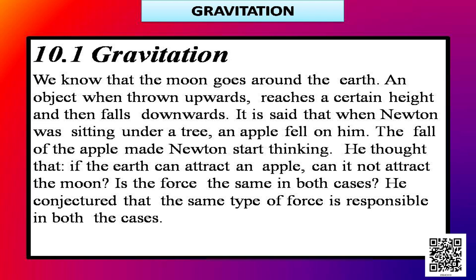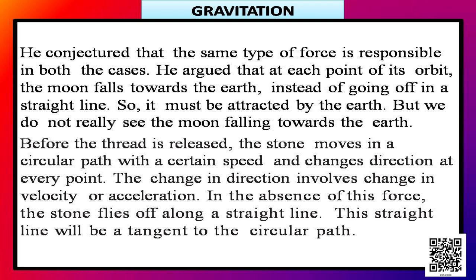It is said that when Newton — the great Sir Isaac Newton — was sitting under a tree, an apple fell on him. The fall of the apple made Newton start thinking. He thought that if the earth can attract an apple, can it not attract the moon? Is the force the same in both cases? He conjectured that the same type of force is responsible in both cases. He argued that at each point of its orbit, the moon falls towards the earth instead of going off in a straight line, so it must be attracted by the earth.